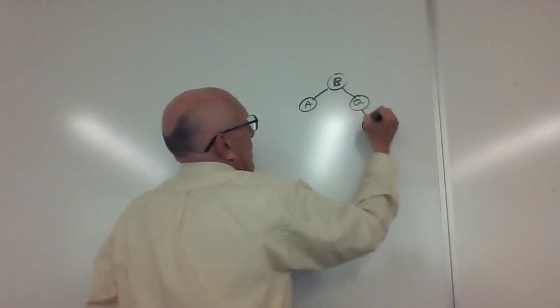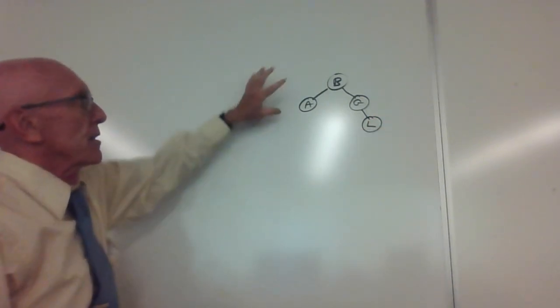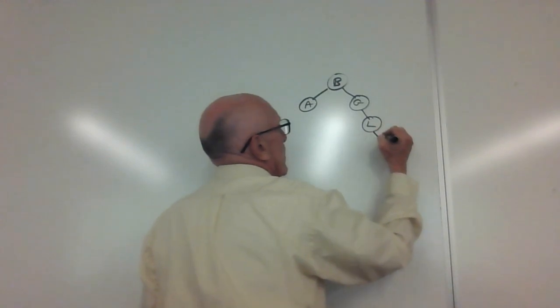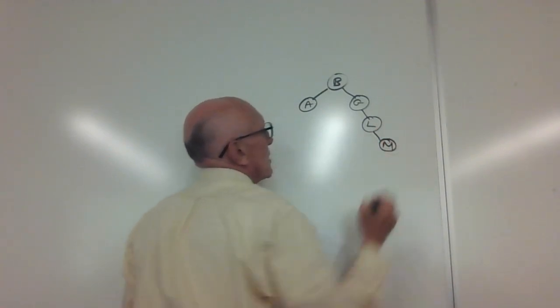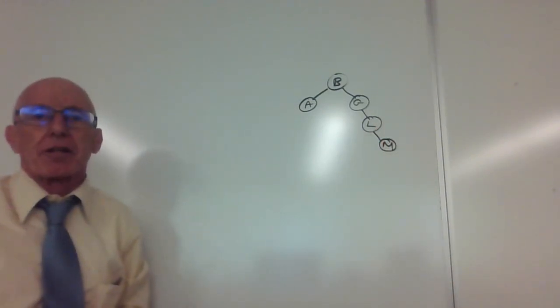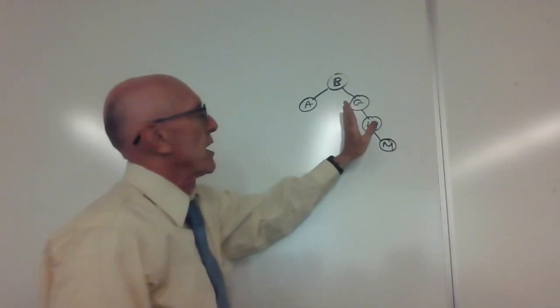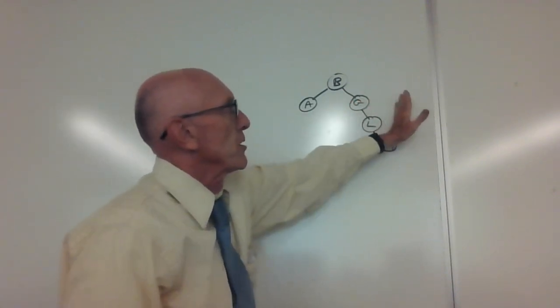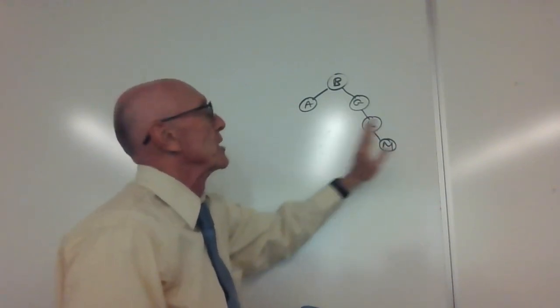When we add L we're still in balance again, the difference in height is at most one, but when we hit an M then all of a sudden everything goes bad because now we have a balance factor of negative two, zero on the left, two on the right.